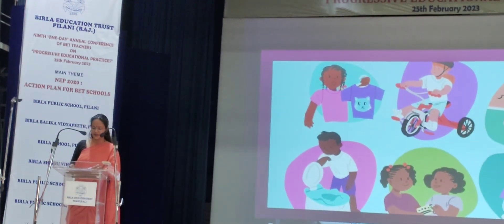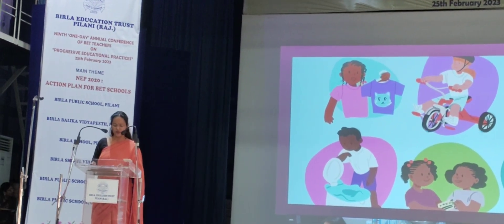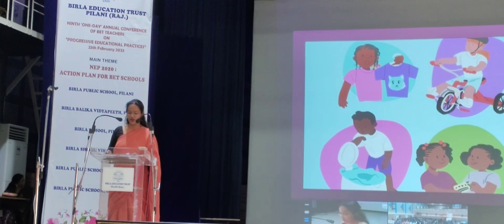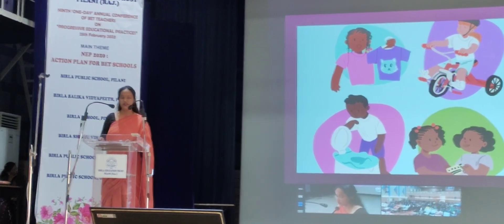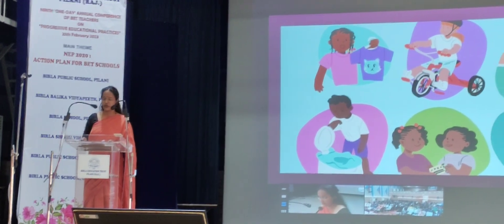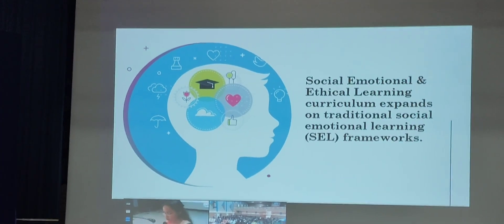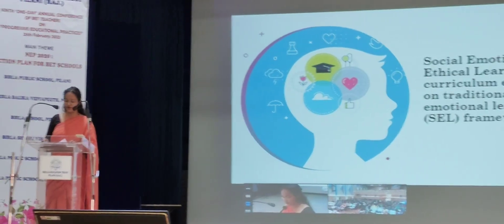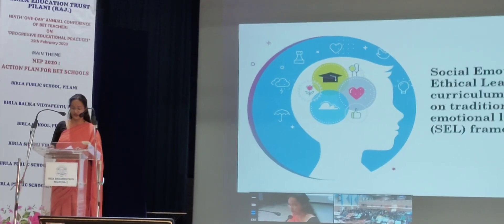Children should be encouraged to think at a young age about the importance of doing what is right, and should be given a logical framework for making ethical decisions, like: Will this hurt somebody? Is that a good thing to do? The domain of socio-emotional and ethical development emerges as an important domain of development both from the Indian tradition and current research.